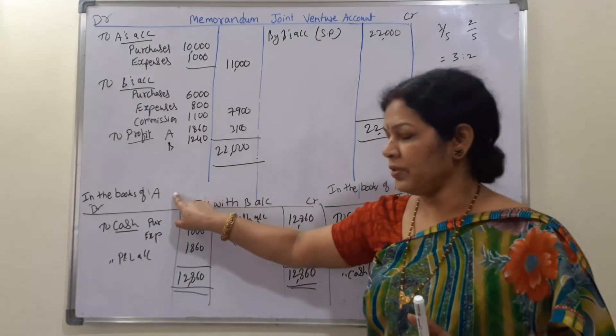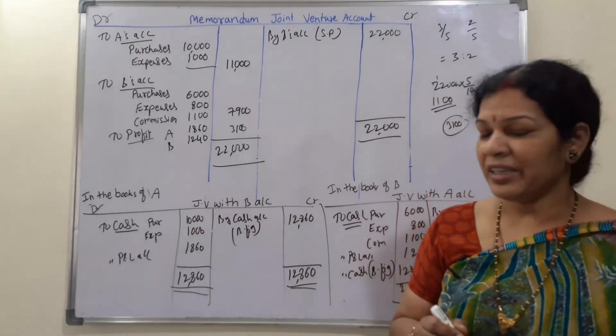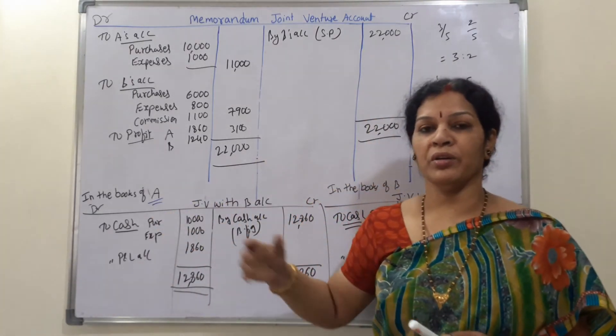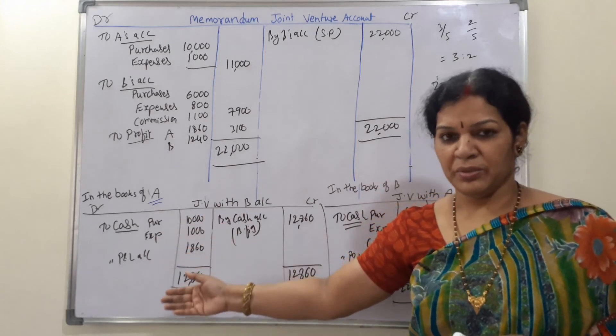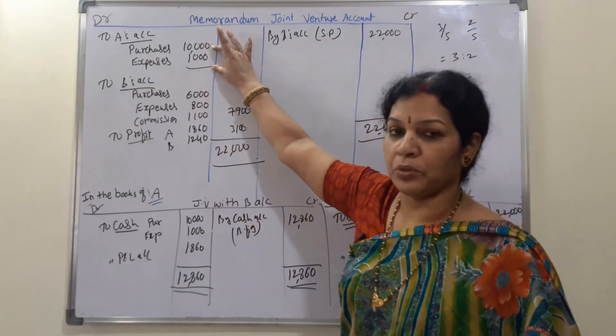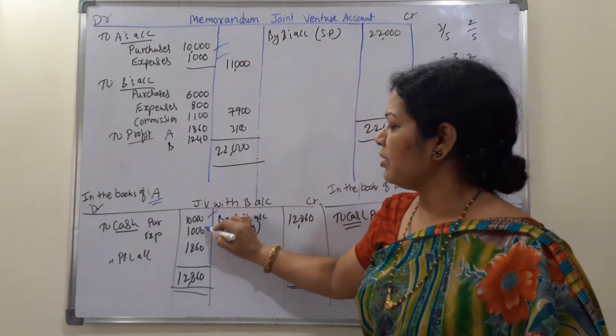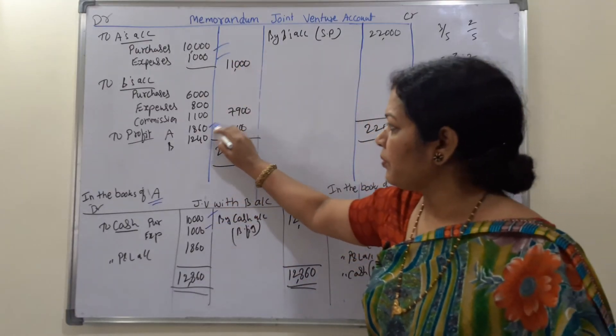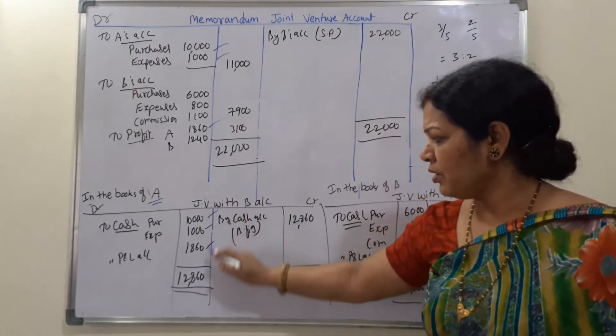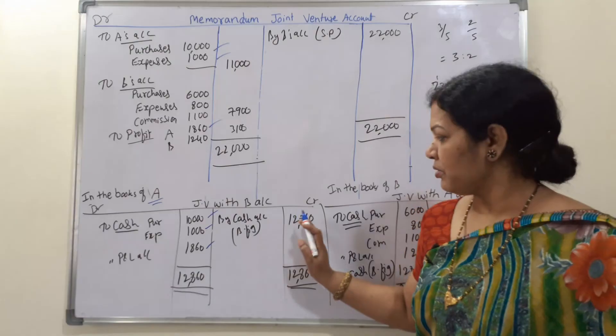Next, in the books of A, joint venture with B's account. In the books of A means A's transactions only we are going to take. This is also nominal account. All the expenses, purchases, debit side, sales will be on the credit side. Now here A's transactions are only two: 10,000 and 1,000. So 10,000, 1,000 is written here. And profit of A, there is nothing else to write for A's transactions. So total 12,860 we got. This is transferring to cash account.